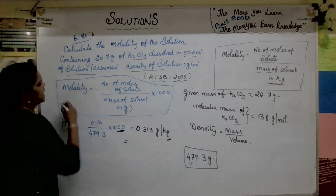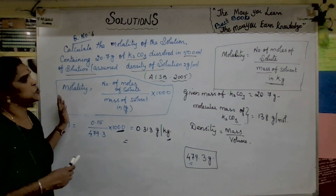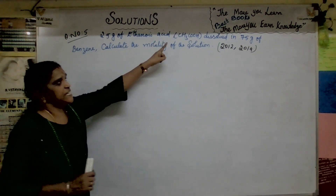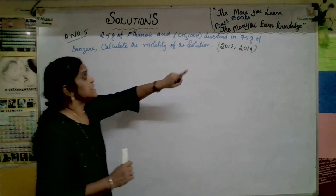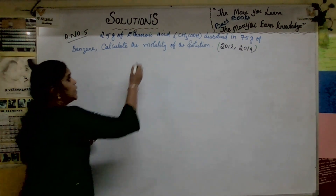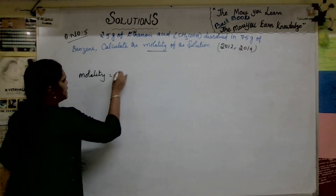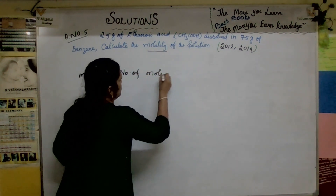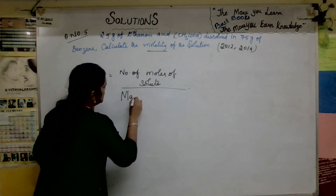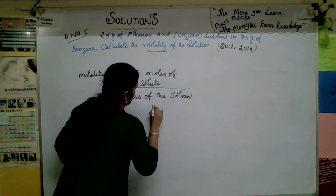Hope you got a better idea about molality of the solution. Now let us see another question: 2.5 grams of ethanoic acid, CH3COOH, dissolved in 75 grams of benzene — calculate the molality of the solution. Molality equals number of moles of solute divided by mass of solvent in kg.